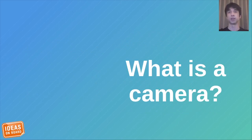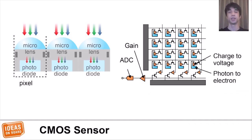Before we get started, let's start with the basics. What really is a camera? What is there between receiving light and software receiving an image? It all starts at the imaging sensor, which converts light to digital values.